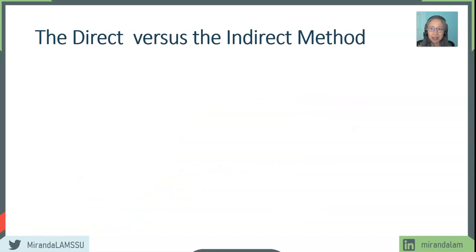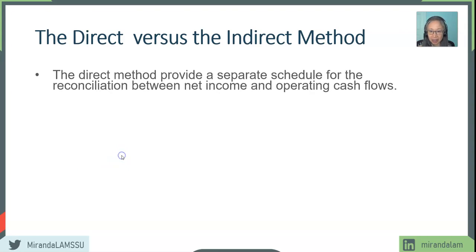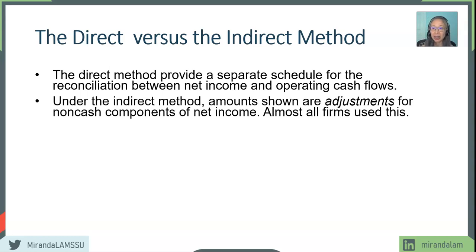For most companies we're going to use the indirect method to compute the statement of cash flow, but it's useful to look at the difference between the direct and indirect methods. The direct method looks at the actual cash flow associated with each activity, but it doesn't give you a direct link — you have to reconcile between net income and operating cash flow using a separate schedule. With the indirect method, you start with net income and then make adjustments for non-cash components, so you don't have to worry about reconciliation. Because of that, the indirect method is much more common.